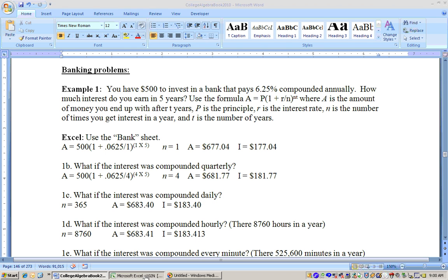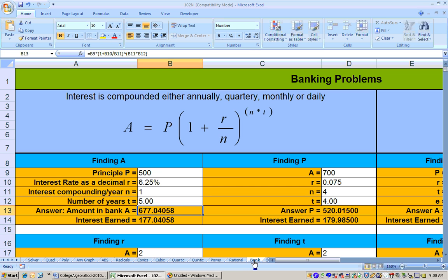You can do all these banking type problems on the banking sheet, and that's the sheet I'm on right now. I'm on the left-hand side of the sheet where you have this formula, and here I'm finding the amount of money that you end up with. It will also find the interest earned here. So I typed in 500, then for the interest rate, I typed in 6.25%. The percent sign is shift with a 5 key. Or you could type it as a decimal, 0.0625. Then type in your N, which is the number of times you get interest in a year, which the first problem was annually. And here's the number of years. It just substitutes the numbers into the formula, and you get $677.04.